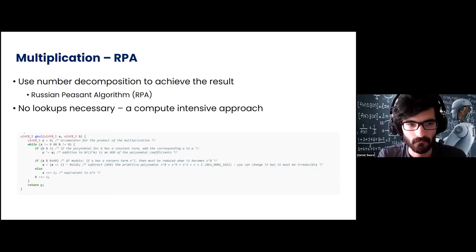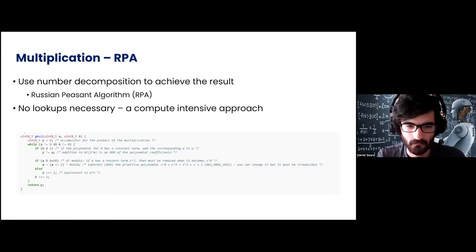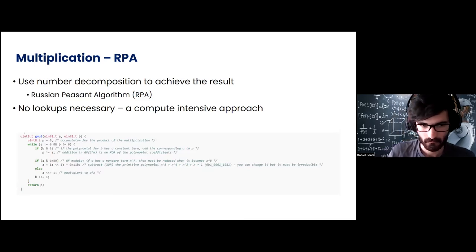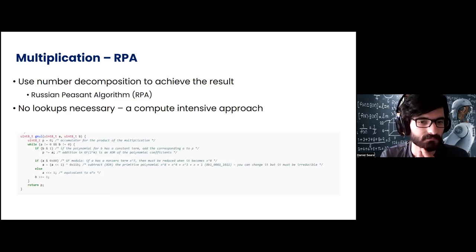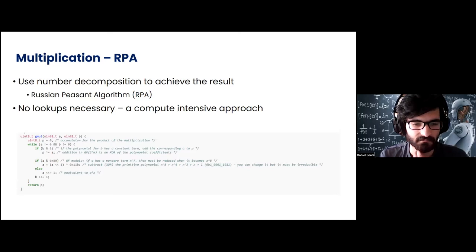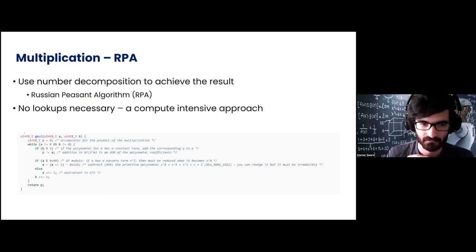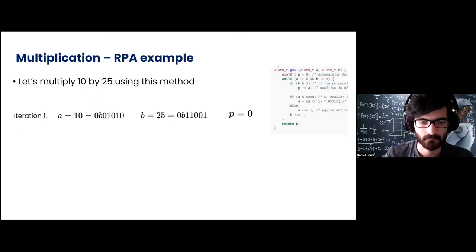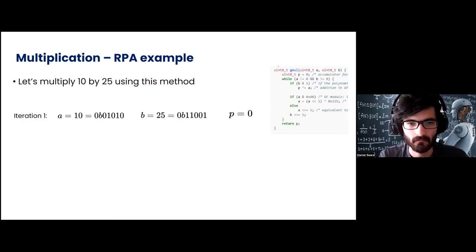Since we can't use memory, let's try to compute it intelligently using number decomposition — the Russian peasant algorithm. The Russian peasant algorithm makes use of the fact that while multiplying might be hard, multiplying by 2 or dividing by 2 is pretty easy — it's normally just a shift operation. We do this multiple times: a times b is equal to 2a times b/2, and we do this iteratively until b is fully reduced. Let's try to multiply 10 by 25 using this method.